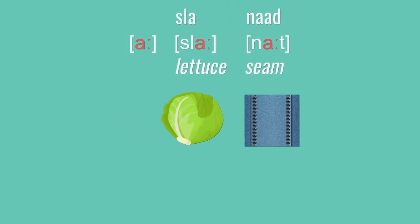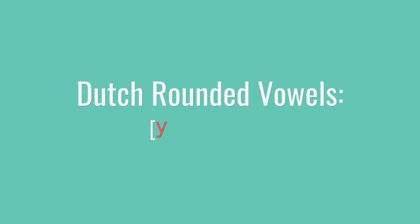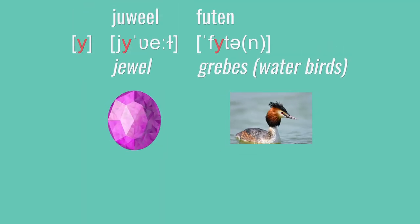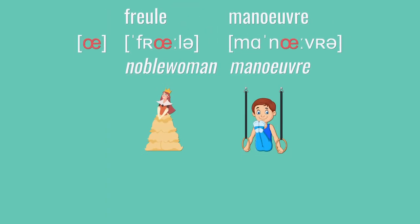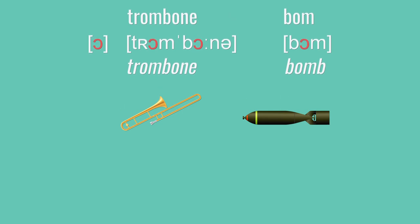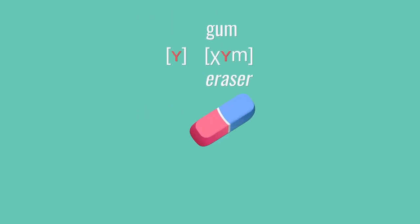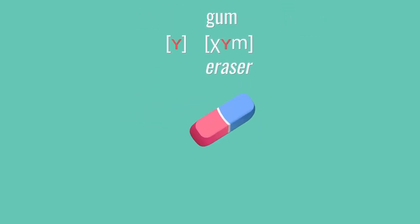At this point, we've covered the long A as in sla or naat. This one had a tongue position in between A as in naat and A as in nat. After that, we covered four rounded vowels, where you take a tongue position you know and then round your lips. There was the rounded E — U as in juweel or voeten. The rounded E — U as in freule or manoeuvre. The rounded E — U as in trombone or bom. And the rounded E — U as in gum.